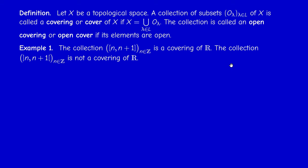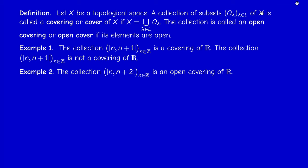If we take the open intervals (n, n+1), this is not a covering of R — it is open but not a covering, because the union of all these intervals gives R without the integers Z (we remove the endpoints). However, if we take the collection of intervals of the form (n, n+2) when n is an integer, then we get an open cover, as you may check.